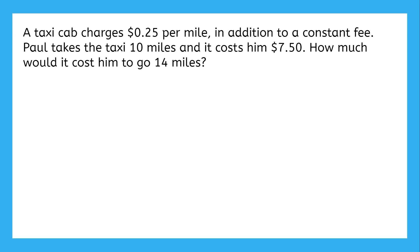So how can we solve this? Well, by using the point-slope formula, of course! The whole problem with using slope-intercept form is that we need the y-intercept for it, but instead we've just got a random point. So we'll use point-slope form instead, because it's made to be used with random points.